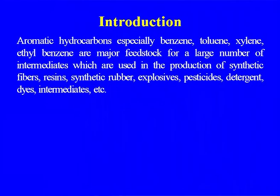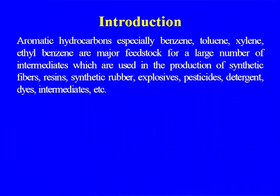Aromatic hydrocarbons — especially benzene, toluene, and xylenes (meaning para-xylene and ortho-xylene) — are of great interest. Ethyl benzene is also important as a major feedstock for styrene. During the process, benzene, toluene, xylene, and ethyl benzene are major feedstocks for a large number of intermediates used in the production of synthetic fiber, resins, synthetic rubber, explosives, pesticides, detergents, dyes, intermediates, and the pharmaceutical industry.